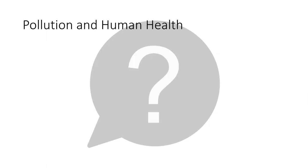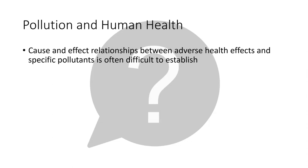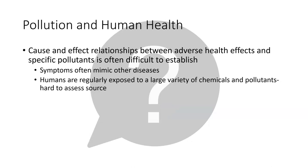So first of all, pollution and human health — some important things to understand, one of them being that cause and effect relationships between specific pollutants and specific health impacts can often be difficult, mostly because the symptoms might mimic other diseases that can occur completely naturally. And because humans and other organisms are exposed to all kinds of different chemicals and pollutants on a fairly regular basis, it's sometimes hard to assess or identify a specific source.